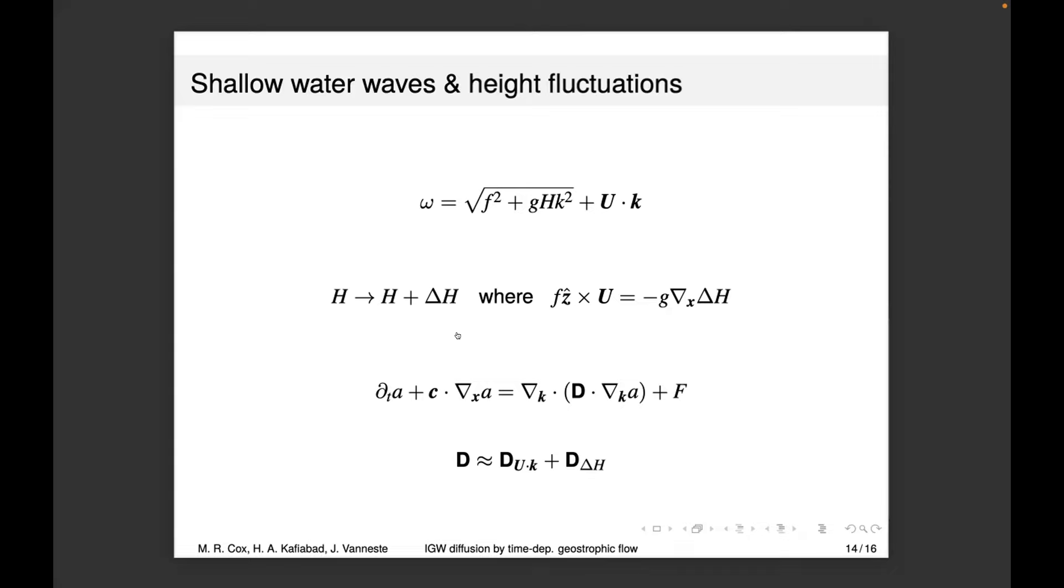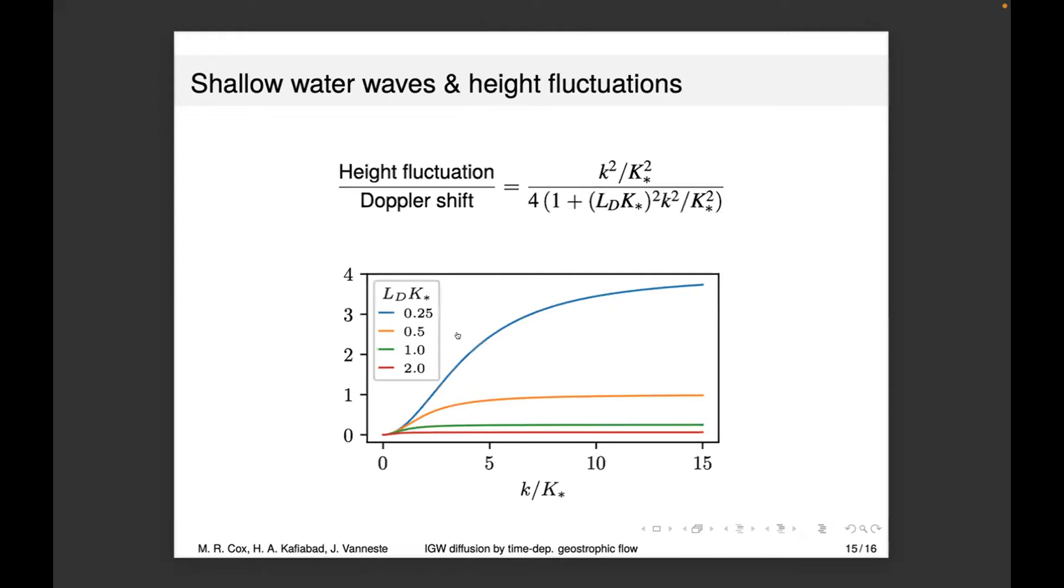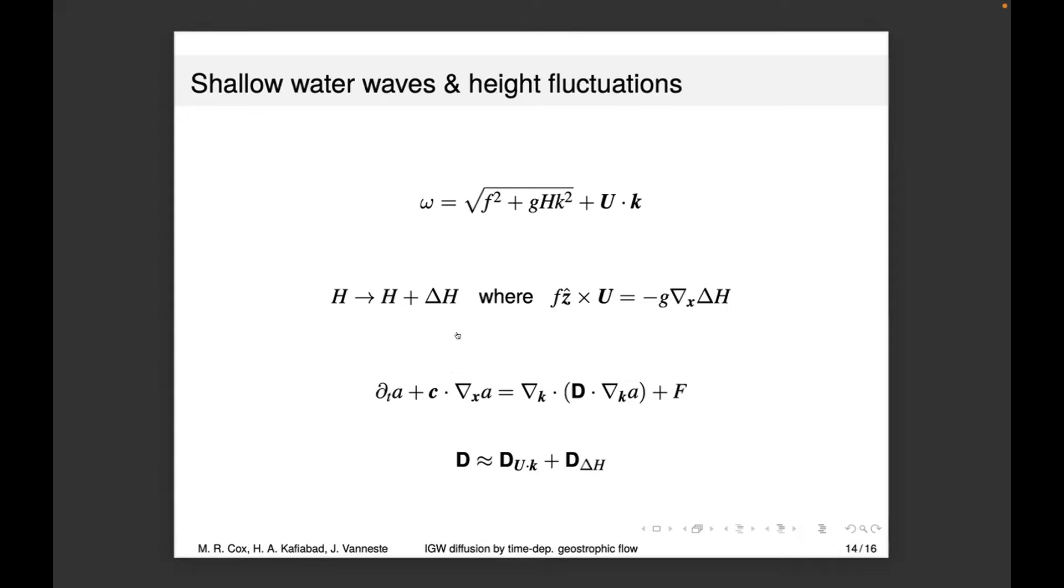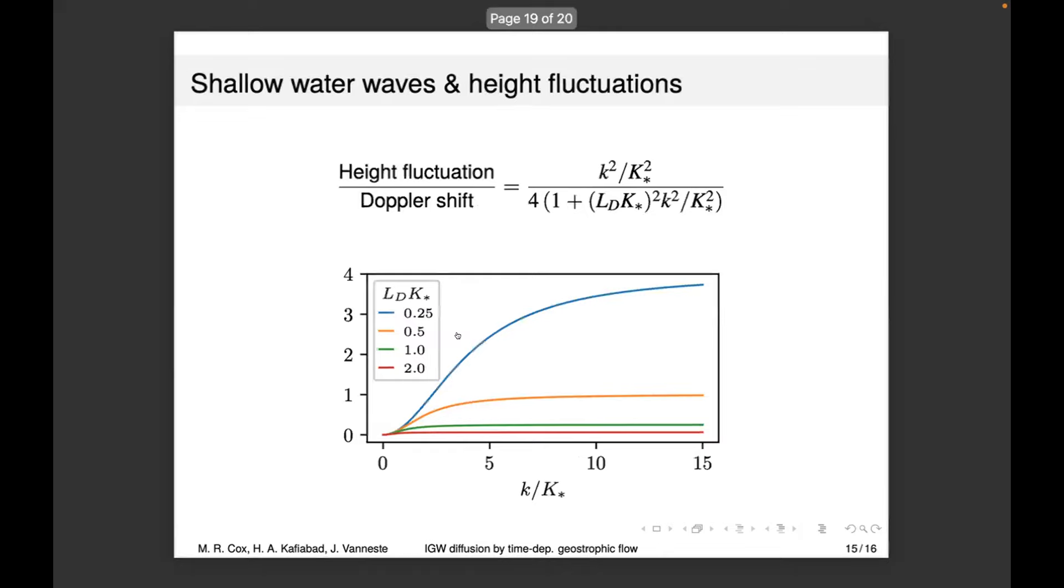To judge how much effect height fluctuation has on the diffusion process, we plotted a ratio between the two terms—the two Ds. Only one component of the tensor is significant, so it's the ratio of those two components. K star is the characteristic flow wave number and LD is the Rossby deformation radius. We plotted this ratio and you can see it tends to a constant value. For example, for LD K star equals one, which is roughly quasi-geostrophic, it tends to about a quarter.